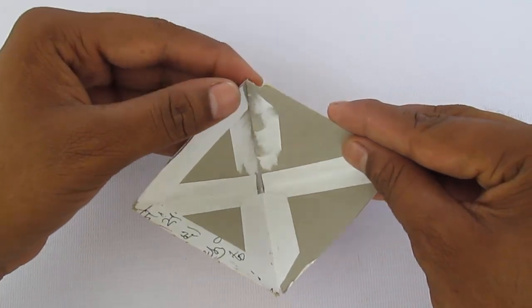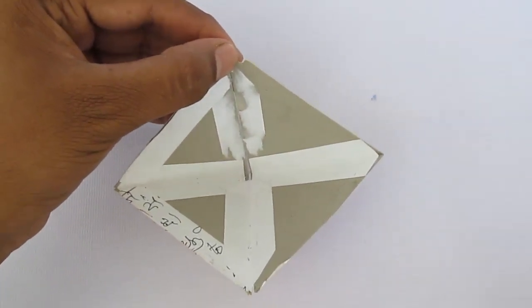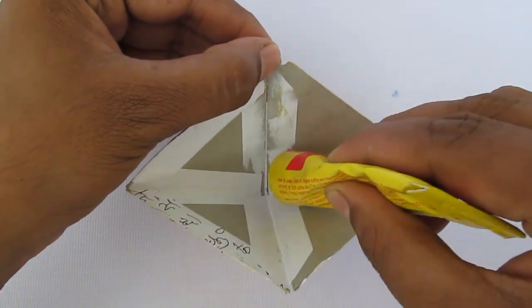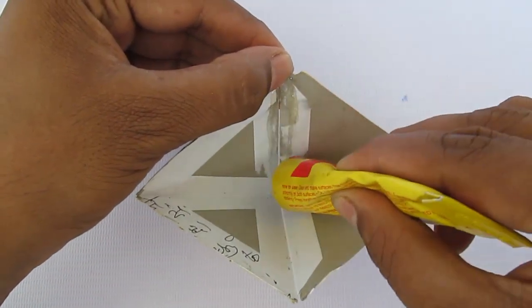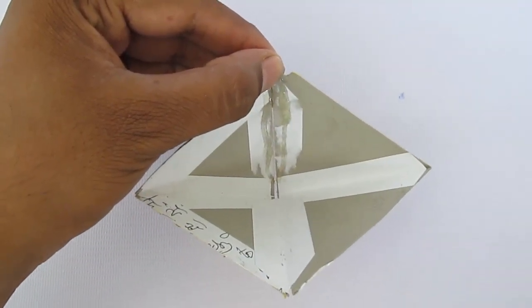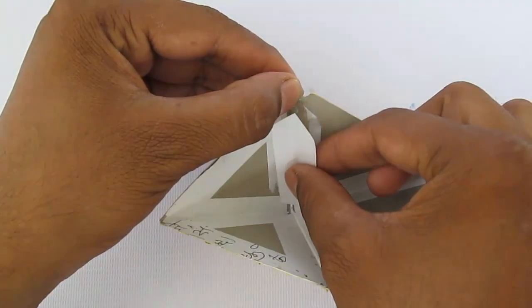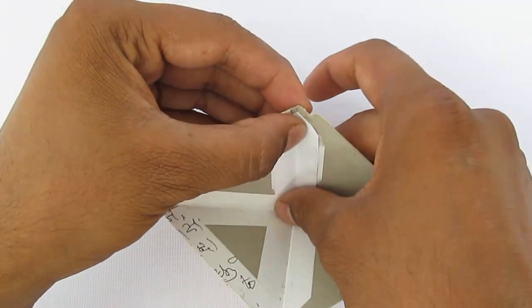First, cut four equilateral triangles, two yellow and two white, on a cardboard paper and join them in alternate colors by sticking small strips of paper underneath. This will make a square pyramid.